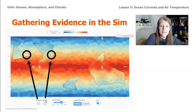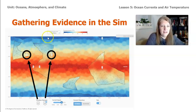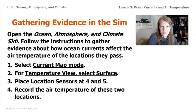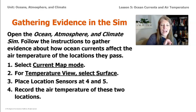This is what the SIM for Ocean's Atmosphere and Climate looks like. This is in surface map mode and I have it set to show us the temperature. If you look down here, you can see there are location sensors — you can click on those and drag them up. This is location 4 and this is location 5. The directions: open the SIM, follow the instructions to gather evidence about how ocean currents affect the air temperature of the locations that they pass.